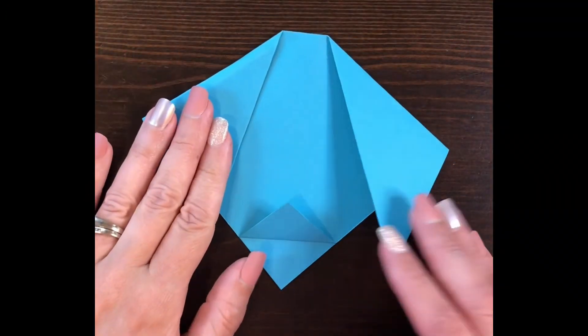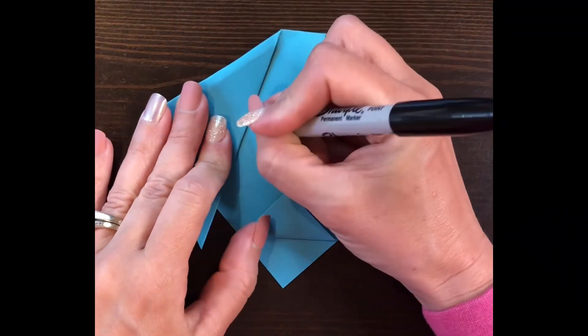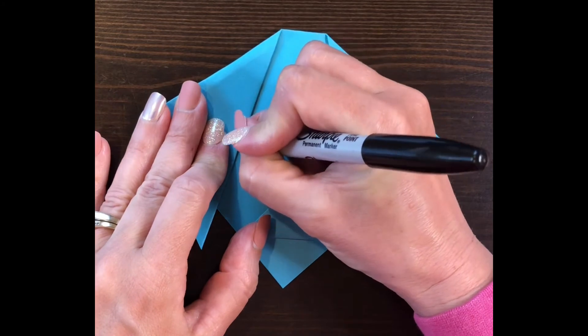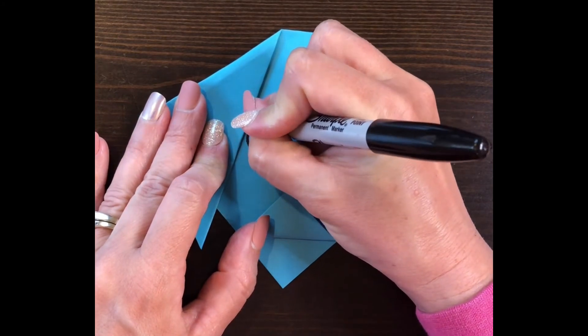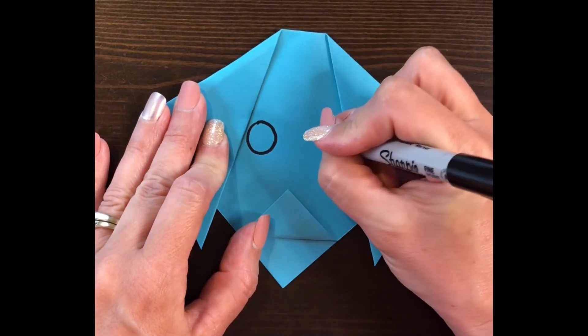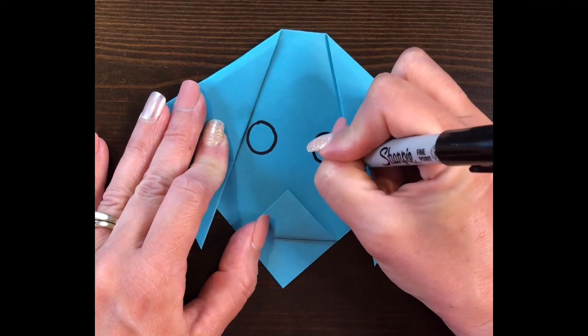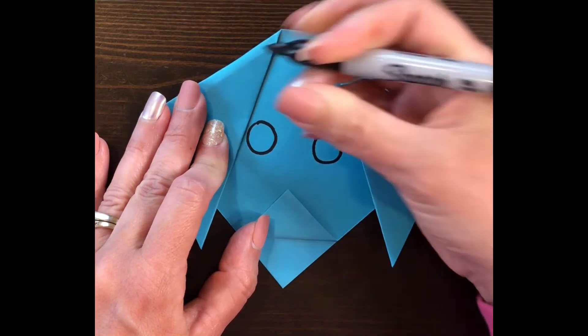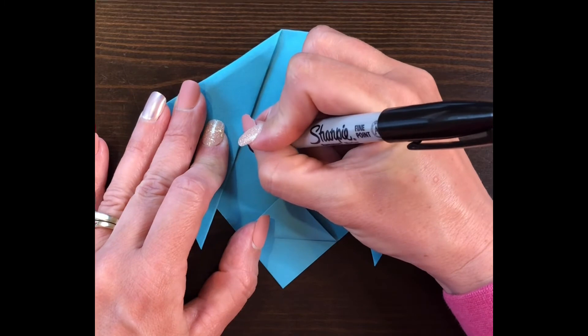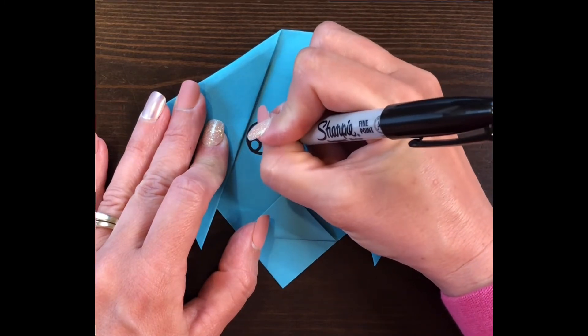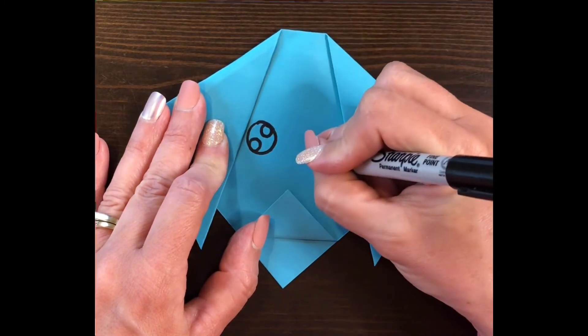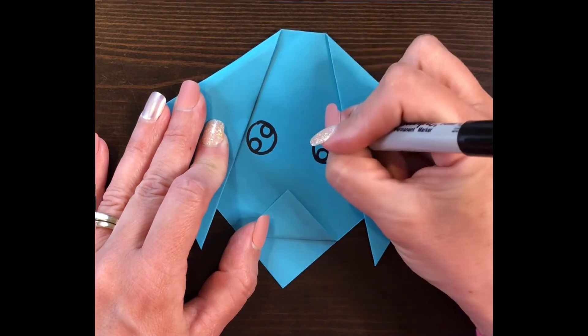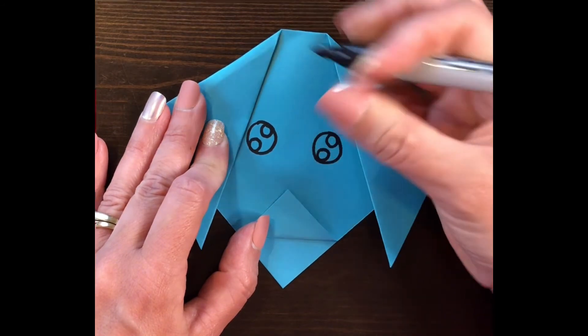Next you're going to want to go in with a pencil, a marker, a crayon, whatever you have to draw with. And draw in the eyes for your dog, and you can do this any way that you like. You don't need to copy what you're seeing here. You could do circles, you could do a different shape for the eyes like ovals. You might add eyelashes. Completely your choice.